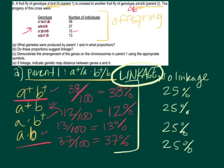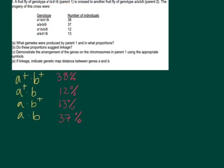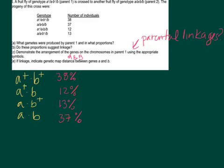Let's move on to part C: demonstrate the arrangement of the genes on the chromosomes in parent one using the appropriate symbols. In other words, we have to draw out what the parental linkages are for parent one. To answer question part C, we need to look at the data again. They're asking how genes A and B are arranged on the chromosome in parent number one — basically, what are the parental linkages for genes A and B. We can ignore parent two because parent two is homozygous recessive, so parent two is boring. We want to know parent one.